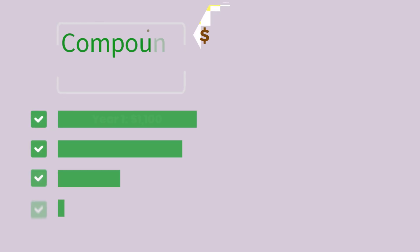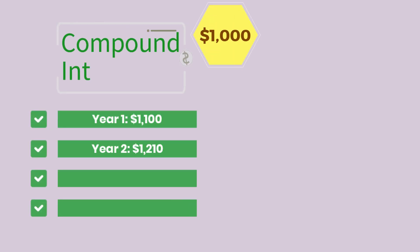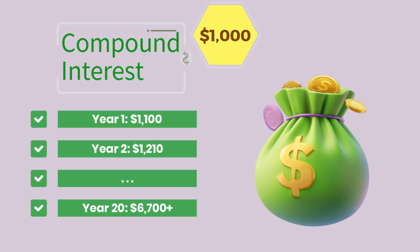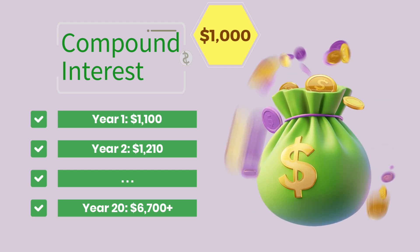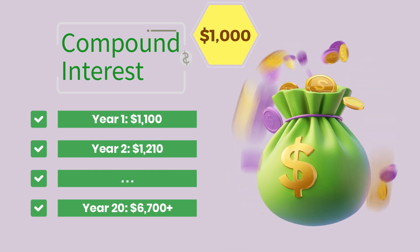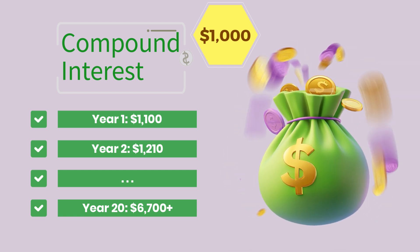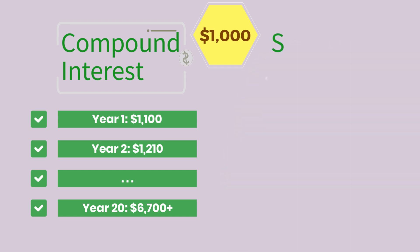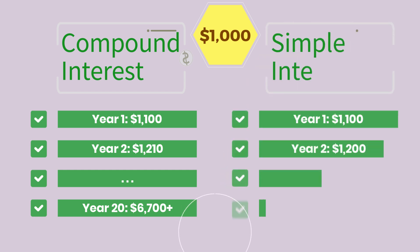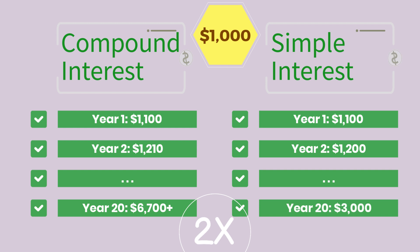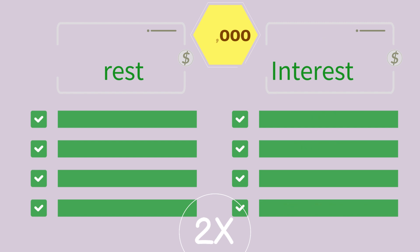After 20 years, your original $1,000 would grow into over $6,700 thanks to compound interest. This is over double the $3,000 you would get with simple interest, where interest is only earned on the principal of $1,000.